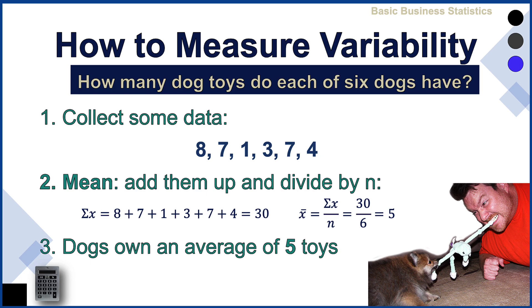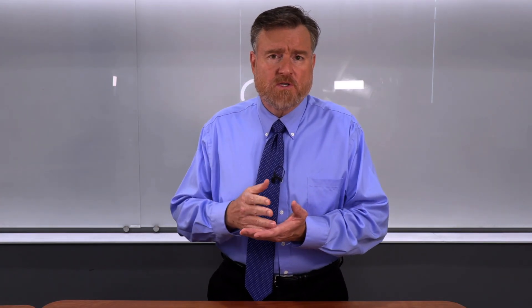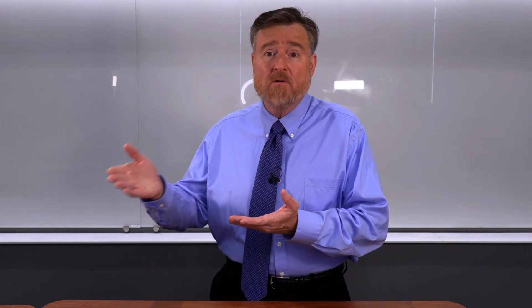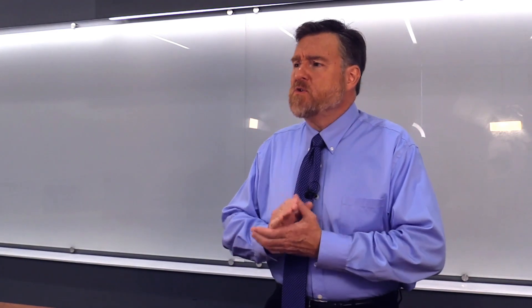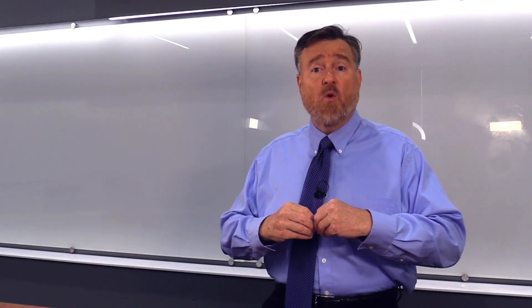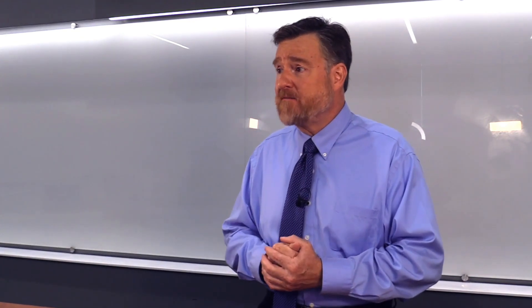Notice that five does not appear in the original data set, but it still gives us a typical score — an average of what these dogs typically own. But now we need to measure the variability. How can we measure the average variability within a data set? Let's take what we know about deviation scores. We can measure deviation of scores from the end of a distribution or from the middle, and we know the middle score is the mean. So what we could do is subtract every score from the mean and use that as our measure of deviation.